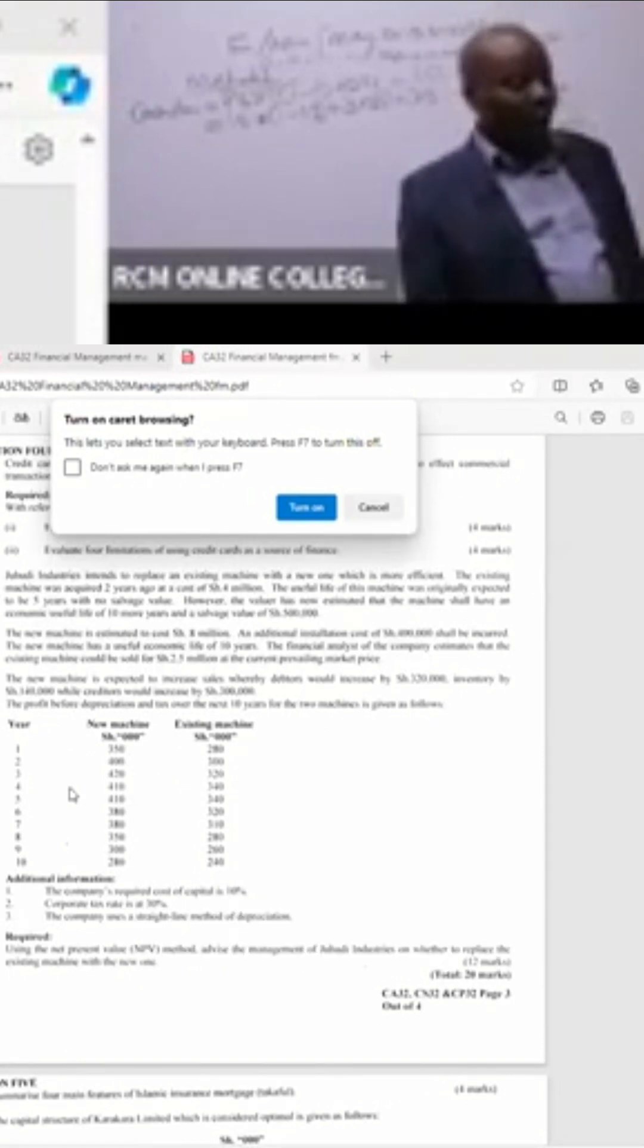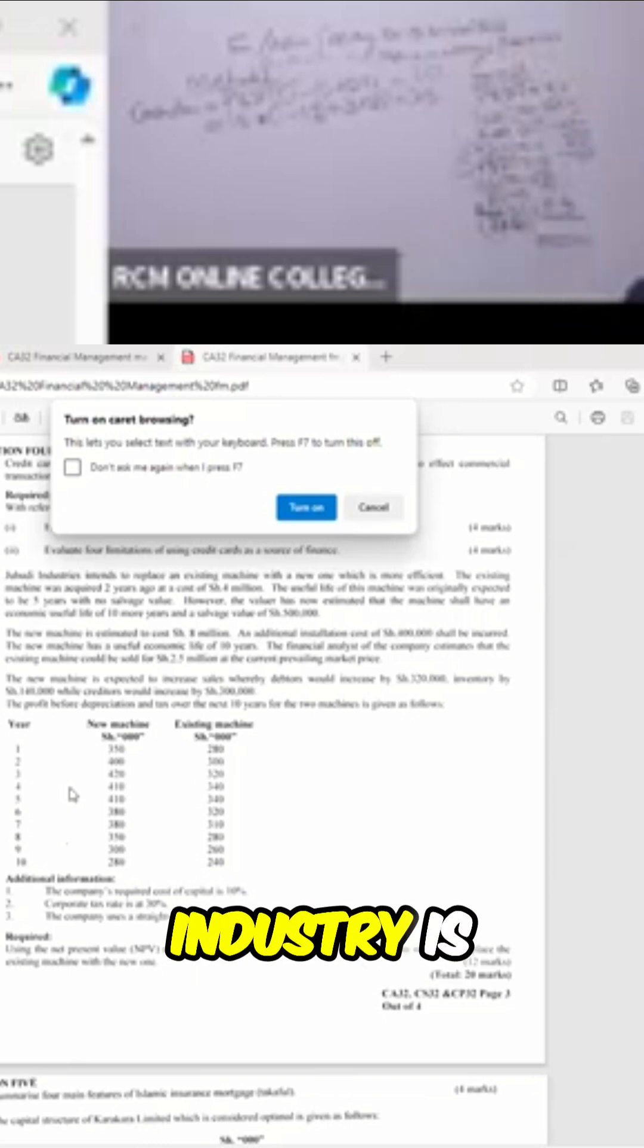I love this question. They are telling us here, Juhudi Industries Limited intends to replace an existing machine with a new one which is more efficient. The existing machine was acquired two years ago at a cost of $4 million. Until next week.